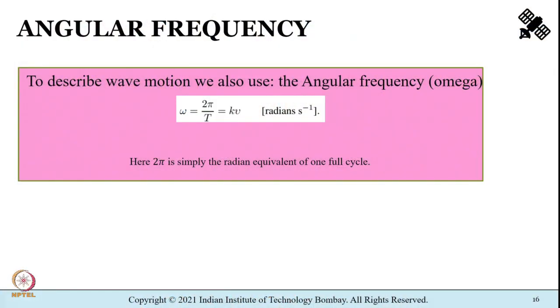There is one more quantity used to describe wave motion: angular frequency, denoted by omega. Angular frequency is the rate of change of phase angle — 2 pi divided by T radians, equivalent to one full cycle. The unit is radians per second.